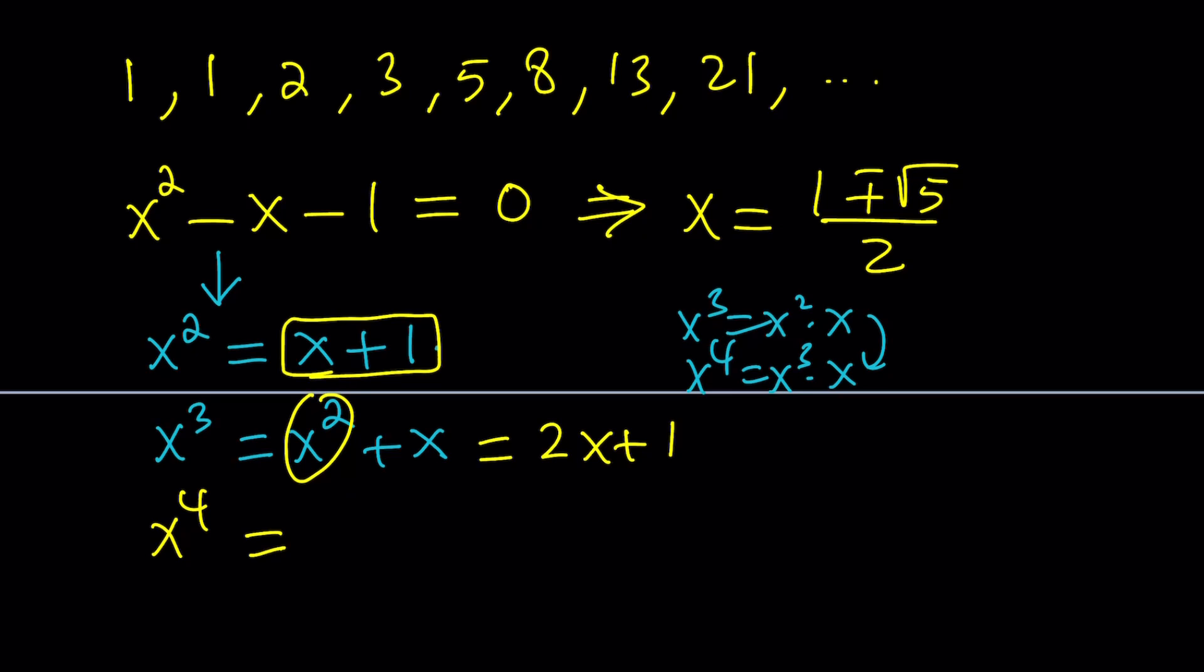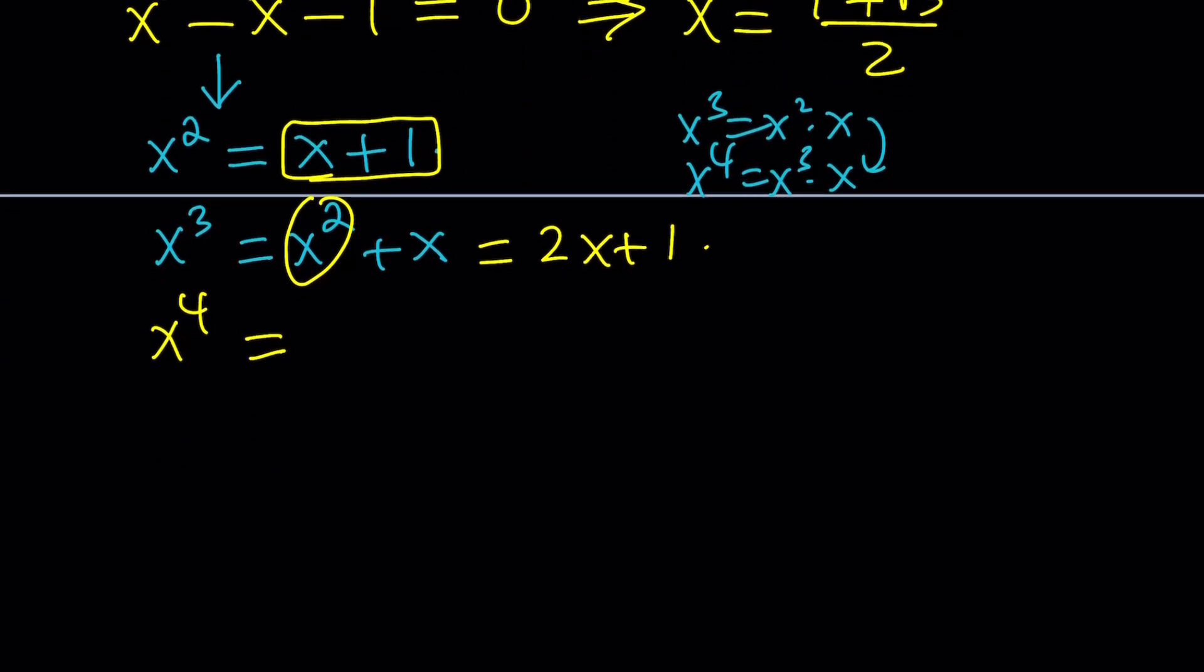x to the fourth, obviously, is obtained by multiplying x cubed, of course, in the linear form, by x. If you multiply 2x plus 1 by x, in other words, I'm talking about distributing the x over, you get 2x squared plus x. And, then, of course, again, we can replace x squared with x plus 1. And, that gives us 2 times x plus 1, which is 2x plus 2 plus x, 3x plus 2. If I do the same thing with x to the fifth, I get 3x squared plus 2x, which turns into 5x plus 3.